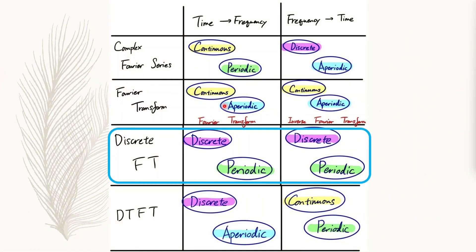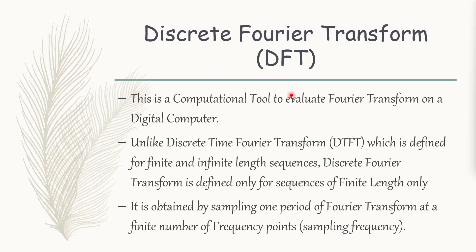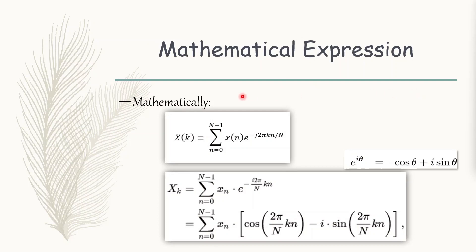Now this is just what I said but in a tabular fashion. Discrete Fourier transform is a computation tool to evaluate Fourier transform on a digital computer. Unlike discrete time Fourier transform, which is defined for finite and infinite length sequences, discrete Fourier transform is defined only for sequences of finite length. It is obtained by sampling one period of Fourier transform at a finite number of frequency points. The mathematical expression for DFT is: capital X of k equals summation of small x(n) times e to the power minus j 2π k n by capital N, where n runs from 0 to N minus 1. This exponential part can be rewritten as cos(2πkn/N) minus j·sin(2πkn/N), since e to the power jθ equals cosθ plus j·sinθ.